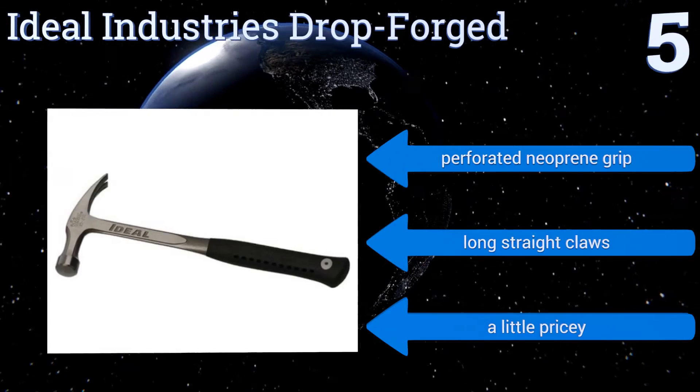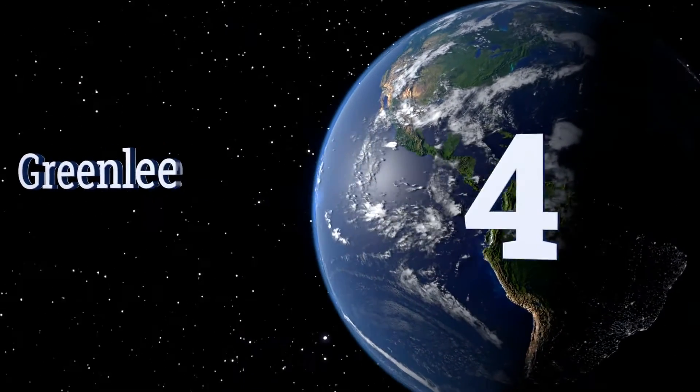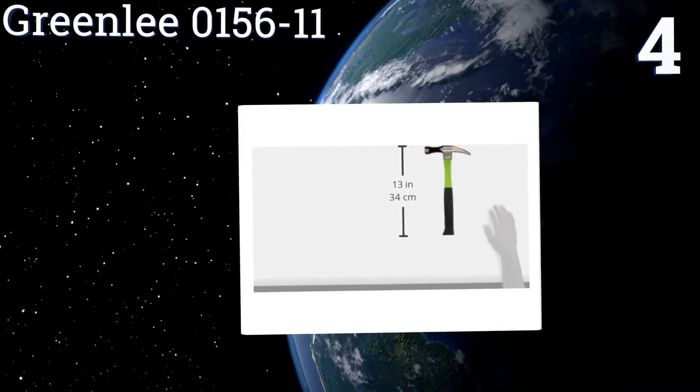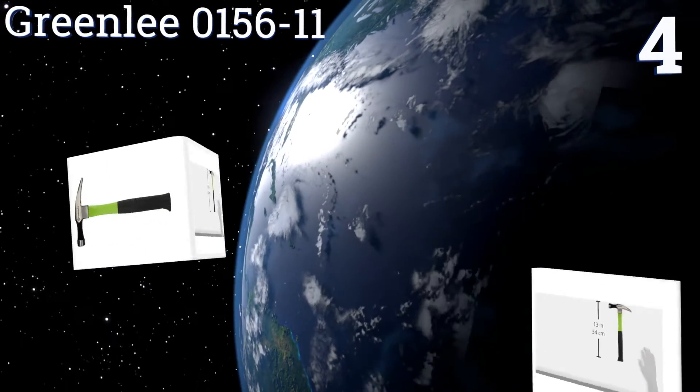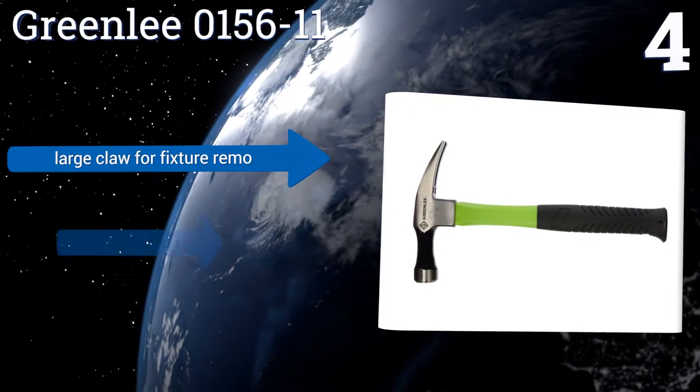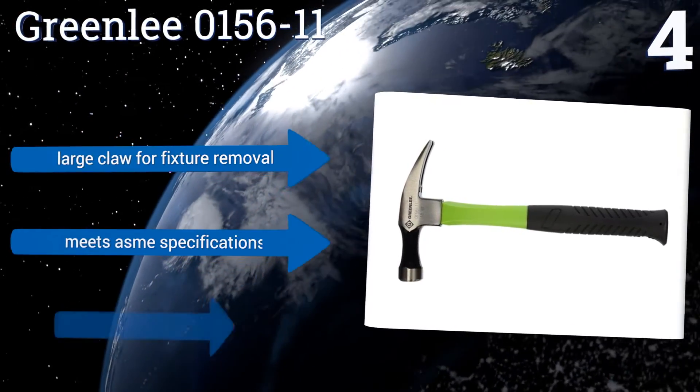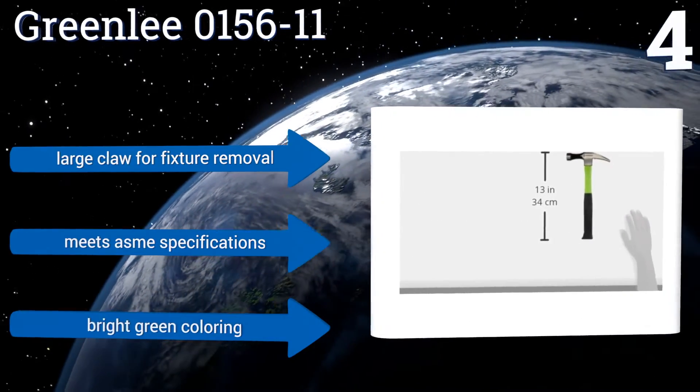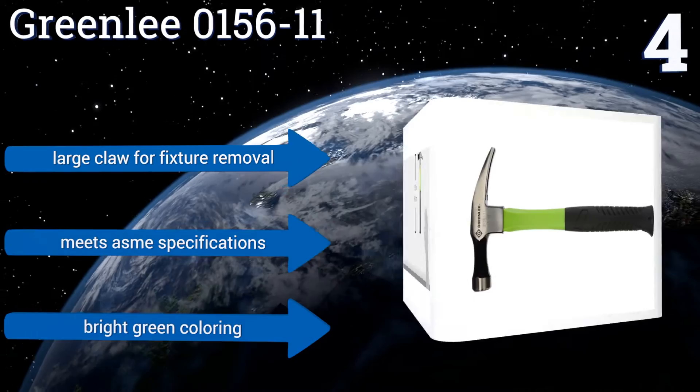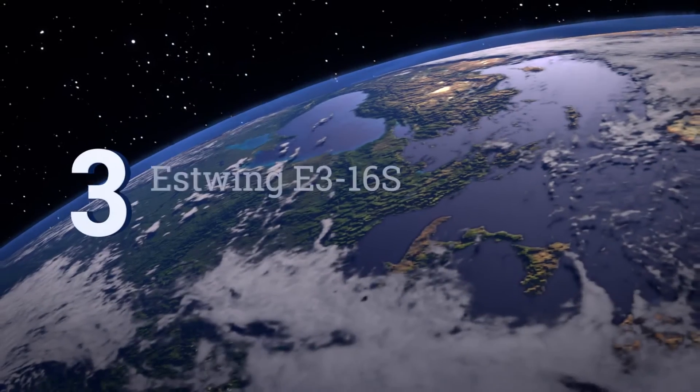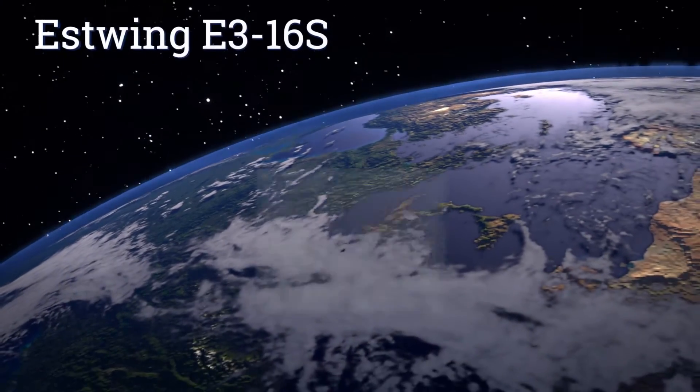Halfway up our list at number four, the lightweight Greenlee 0156-11 incorporates a cushioned grip and a flared handle end to produce an extremely comfortable option that can be used all day without leaving your hand with blisters or calluses that lower quality units might. It features a large claw for fixture removal and a bright green coloring. It meets ASME specifications.